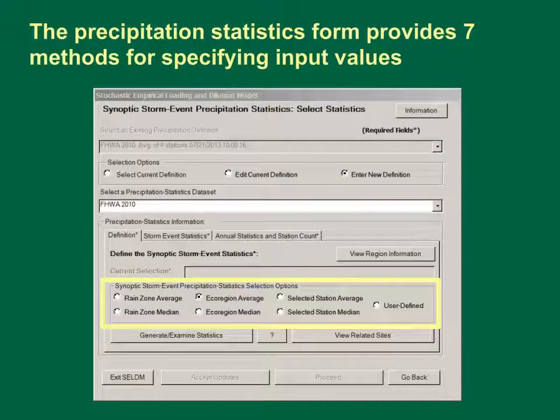This is a screenshot of the SELDM Precipitation Statistics input form. This form provides seven methods for selecting or entering precipitation statistics: rain zone average, rain zone median, ecoregion average, ecoregion median, selected station average, selected station median, and user defined. The first four options use the average or median of statistics for all stations in the specified rain zone or ecoregion. The next two options use the average or median statistics from one or more stations selected to represent conditions at the site of interest. The final selection, user defined, lets you input entirely new values or edit existing values, and is designed to facilitate sensitivity analysis and allow input of site-specific statistics.